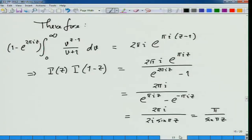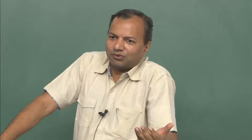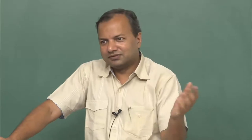Now, on the left side Γ(z)·Γ(1−z) is analytic over the entire complex plane except for poles at the non-positive integers. The right side π/sin(πz) is analytic over the entire complex plane except for poles at all integers, and they agree on this strip. Now we invoke the uniqueness of analytic continuation — they must agree everywhere.